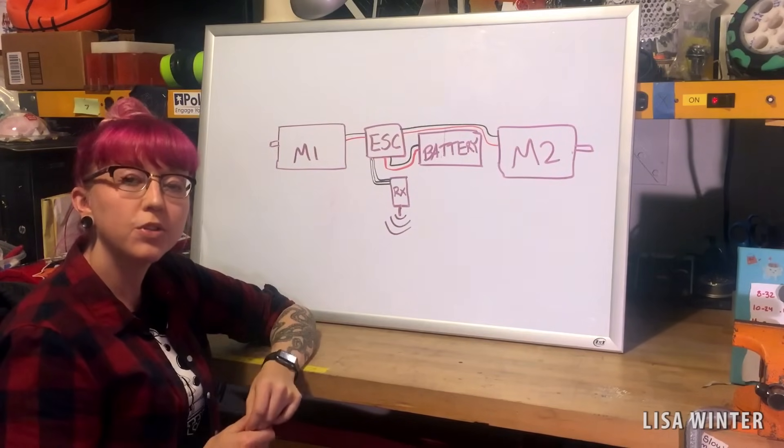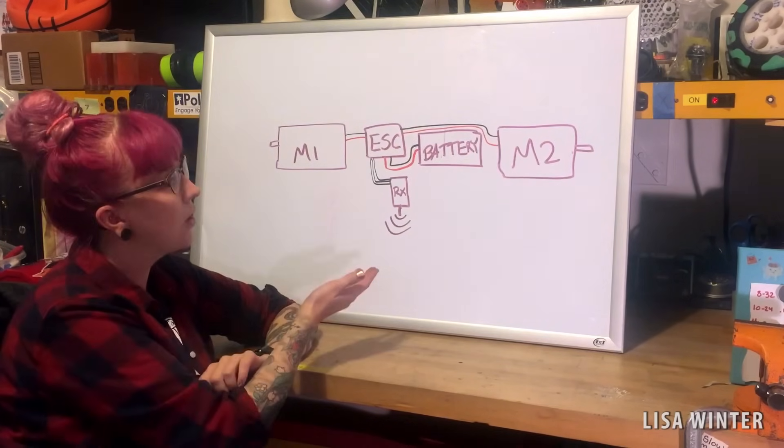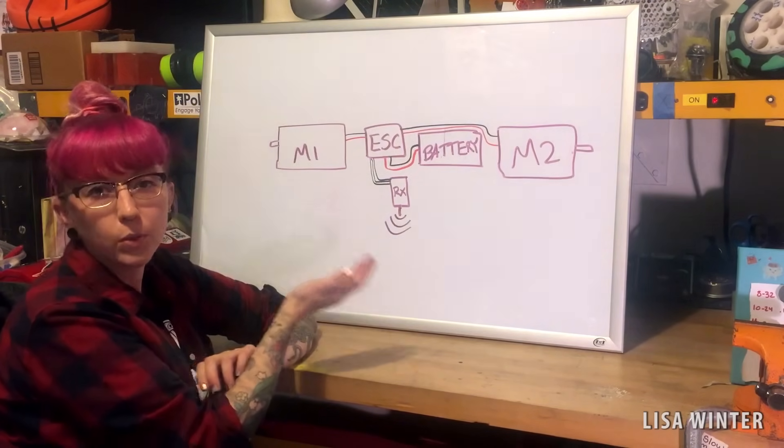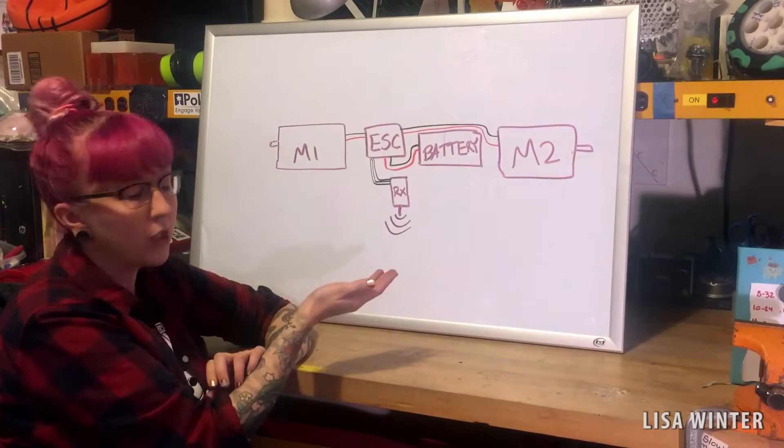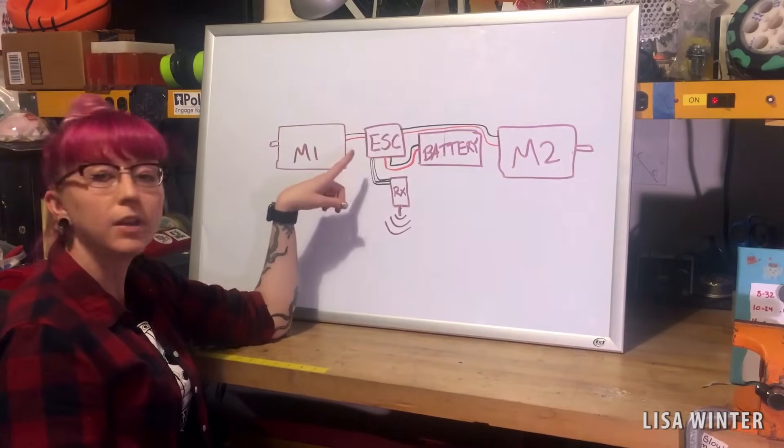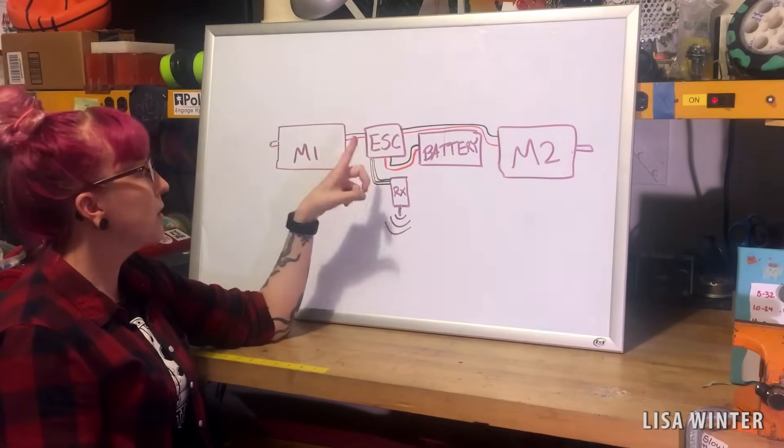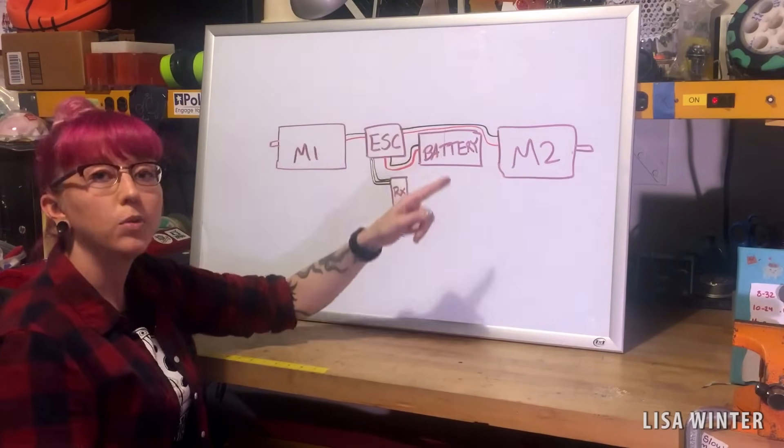If you add one more motor to the previous diagram, you get this. It's the same thing that we just went over, except you have to make sure that your speed control has two channels. So it's going to output to motor one and motor two.